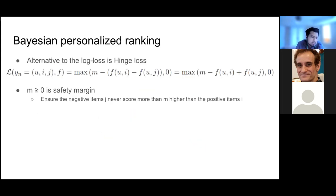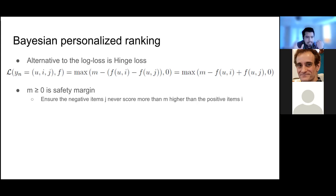We can also use a hinge loss. The formula includes m ≥ 0 as a safety margin, using a max operator between some term and zero. It ensures that negative items are never scored more than m higher than the positive items.